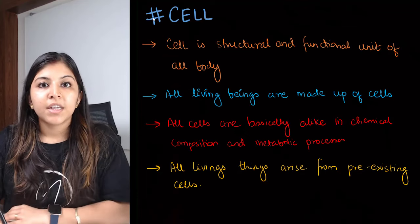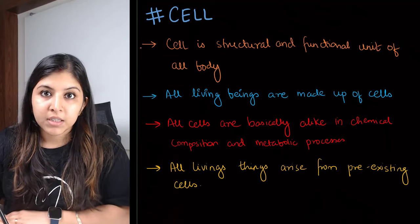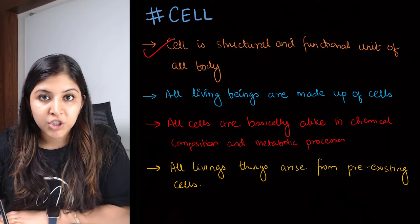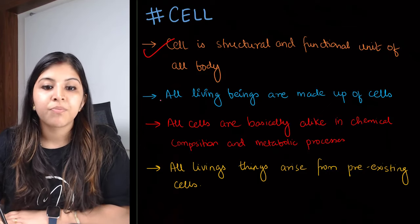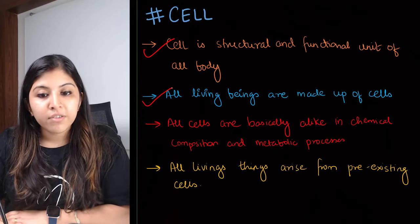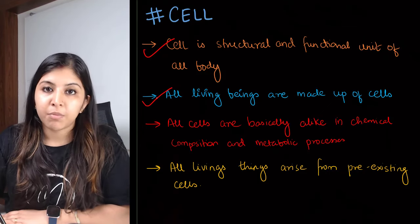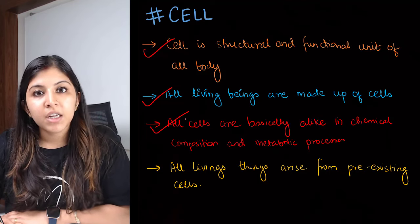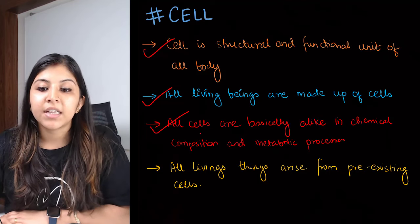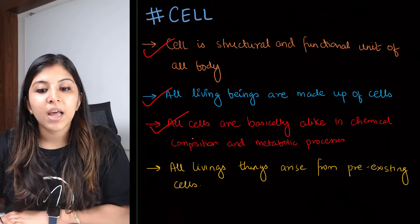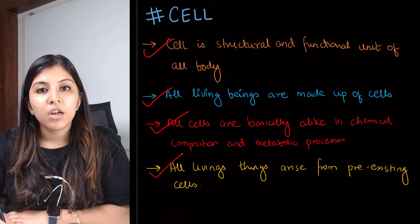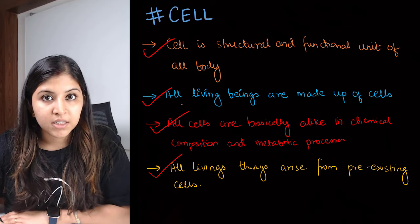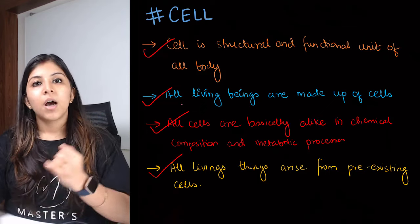Now we will talk about the properties of cell. What are the properties? First, cell is a structural and functional unit of life. All living beings are made up of cells. All cells are basically similar or alike in chemical composition and metabolic processes, and all living things arise from pre-existing cells. These are the properties.